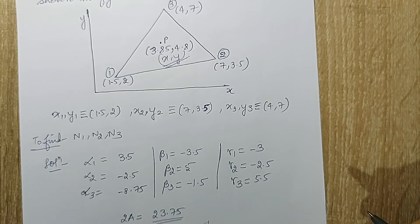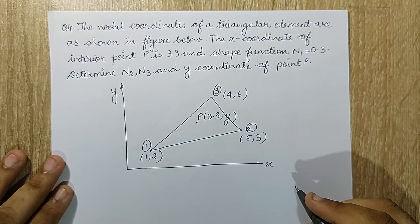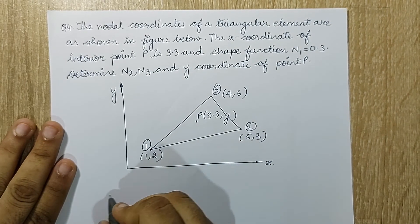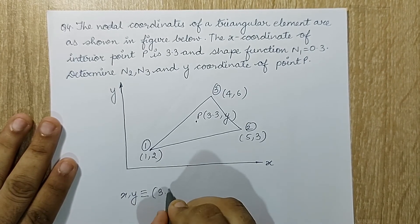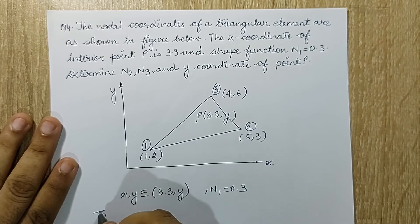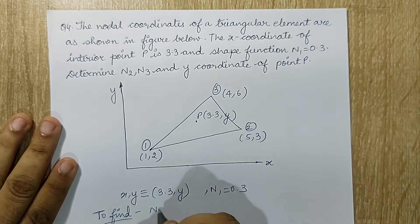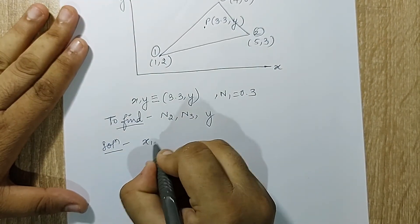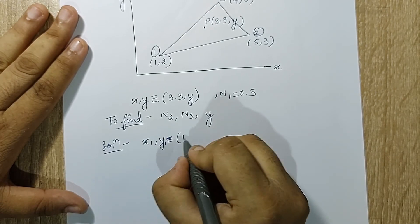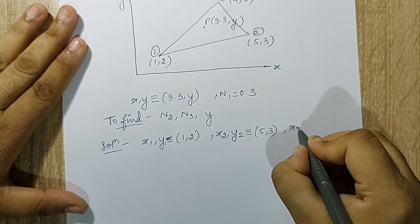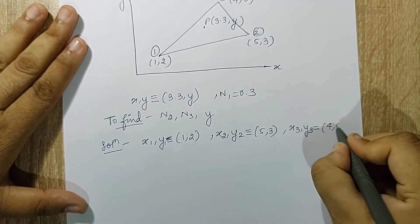Next we go to question 4, the last question on this topic. The nodal coordinates of a triangular element are shown in the figure. The x coordinate of interior point P is 3.3, and shape function n1 is 0.3. The value of y is not given. I have to find n2, n3, and y. The three nodal coordinates are: x1, y1 = 1,2; x2, y2 = 5,3; x3, y3 = 4,6.